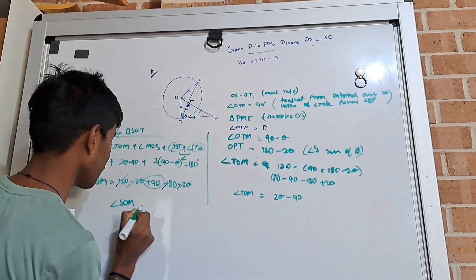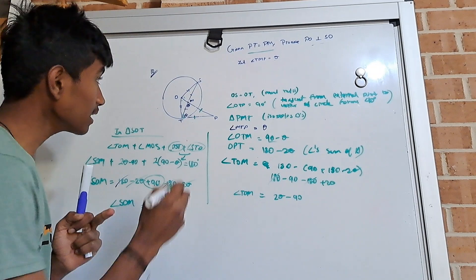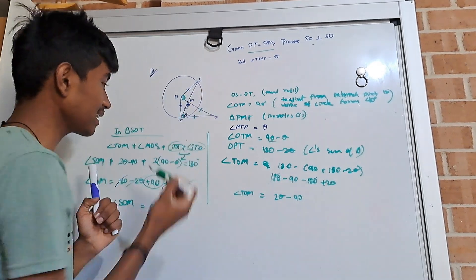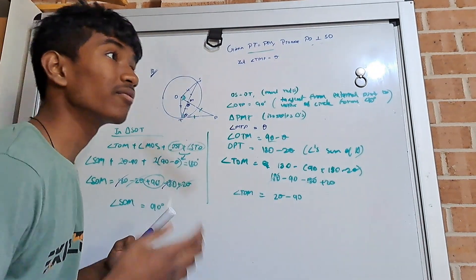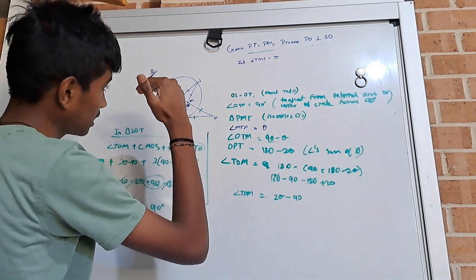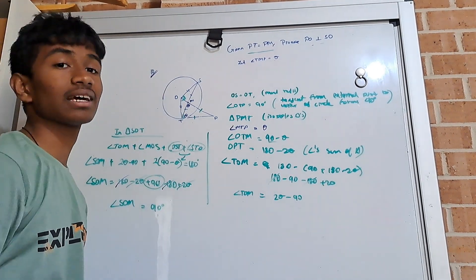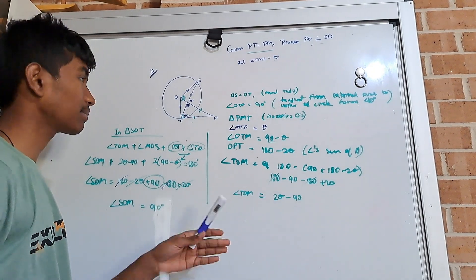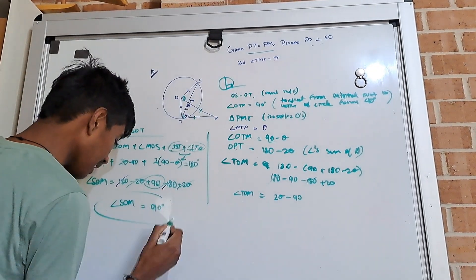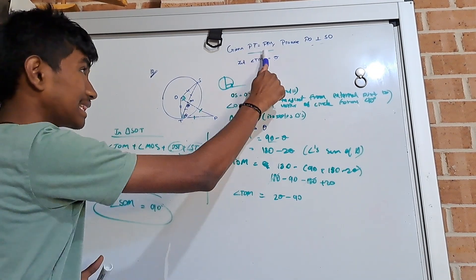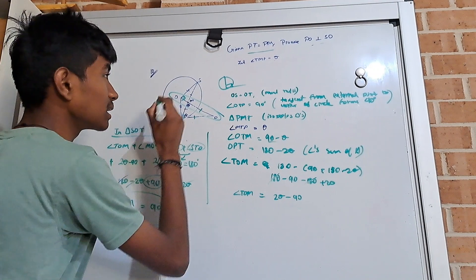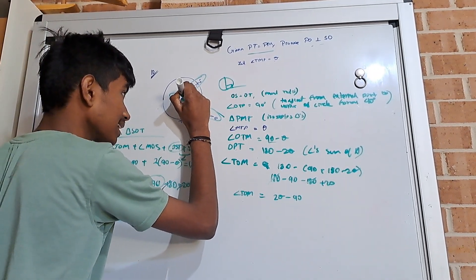So angle SOM is equal to 90 degrees. We have proved that this angle is equal to 90 degrees. If this angle is 90 degrees, we know by the converse theorem that when an angle is 90 degrees the two lines are perpendicular. So we have proved that PO is perpendicular to SO because angle SOM — which is the angle they intercept at — is 90 degrees.